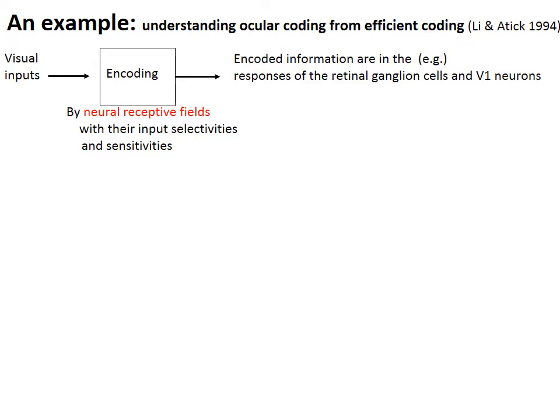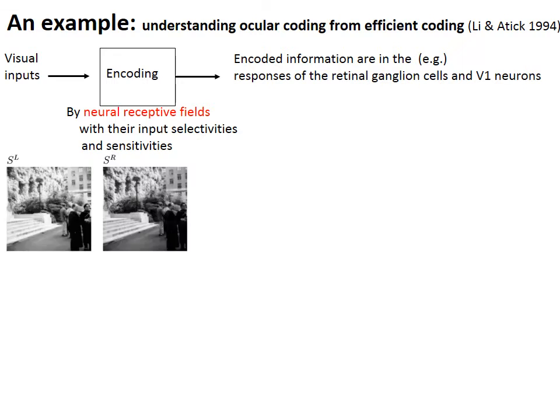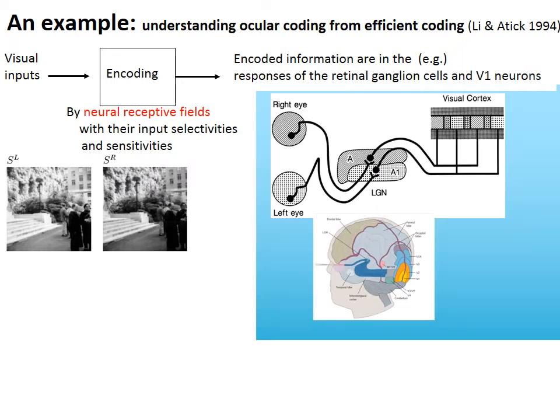Let's illustrate with an example: ocular coding, with inputs coming from two eyes. Let SL and SR denote signals from the left eye and right eye respectively. In the brain, inputs from the two eyes are sent to the back of the brain, to an area called primary visual cortex, or V1, through an intermediate station, LGN. The inputs from the two eyes then project to the V1 neurons.